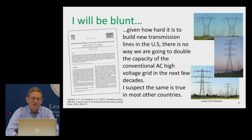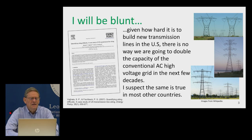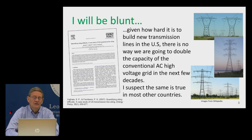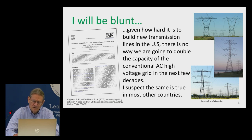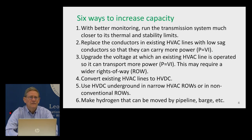Given how hard it is to build new transmission in the U.S., there's no way we're going to double the capacity of conventional AC high-voltage grid in the next few decades. I suspect the same is true across much of the rest of the world. Here are six ways to address that, and I'll say a word about each of them.